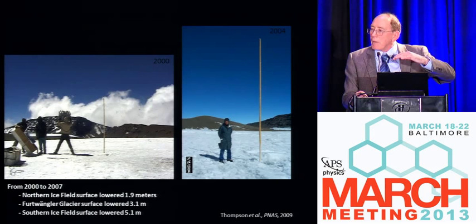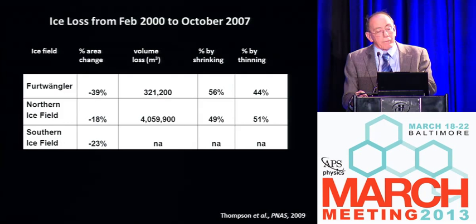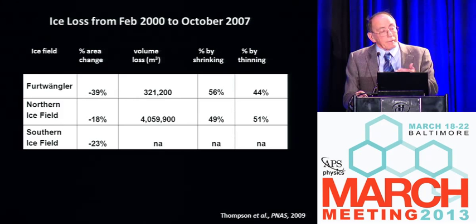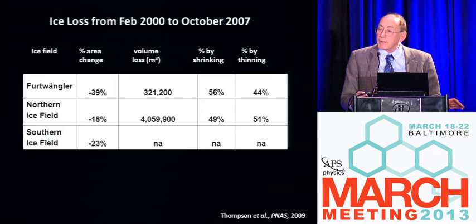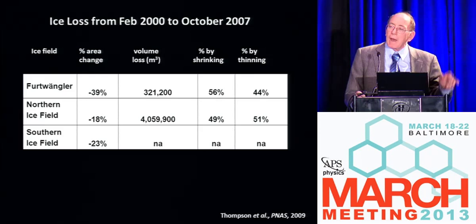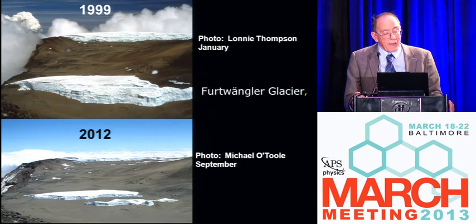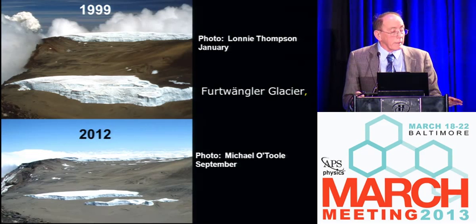If you look at the glaciers on Kilimanjaro and look at the volume of ice loss, you can examine what percentage is coming from shrinking — the aerial changes that you see from satellites — and the percentage coming from thinning, which is changes in thickness. You can see they're about equal, and we miss the thinning when we look at satellite images alone. Here's a view of the crater on Kilimanjaro — the Furtwängler Glacier in the foreground in 1999, and the same place about six months ago. You can see how rapidly these glaciers are thinning and breaking up, and those glaciers will disappear in the near future.